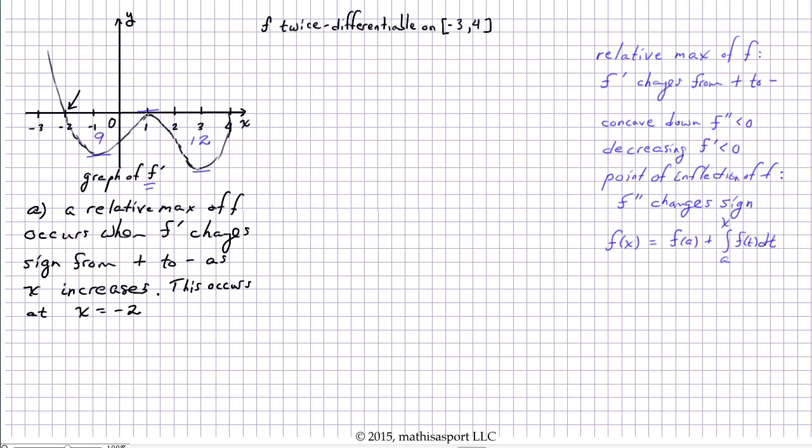Now you might be tempted to consider this point right here at 1. After all, f prime is 0 here, and we often use locating where f prime is 0 as a shortcut to identifying relative maxima or minima. However, remember the key criteria is that it has to change sign. So just because it is 0, which is often an indicator of where to look for sign changes, doesn't mean that it actually does change sign. Here f prime remains negative.